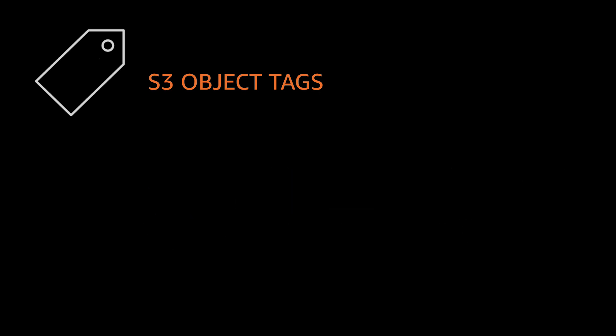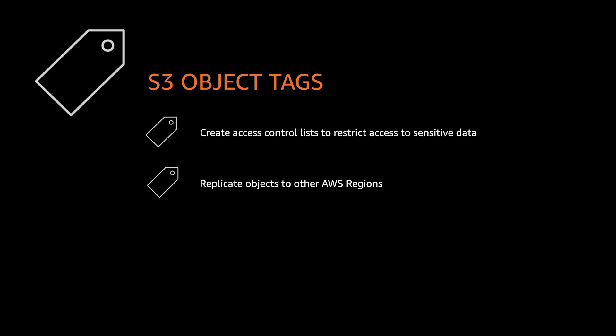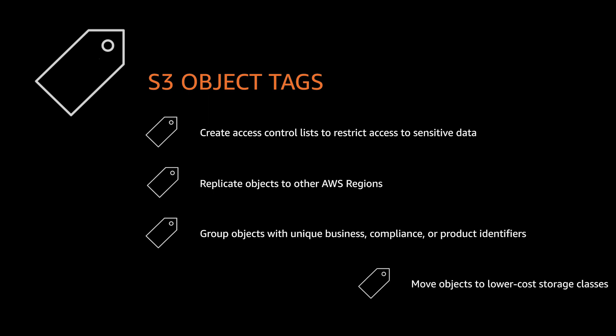After tagging your objects, you can use access control lists to restrict access to data with specific tags, replicate objects to other AWS regions, group objects with unique business, compliance, or product tags, and create lifecycle policies for objects with specific tags, and move them to other S3 storage classes as access patterns change.